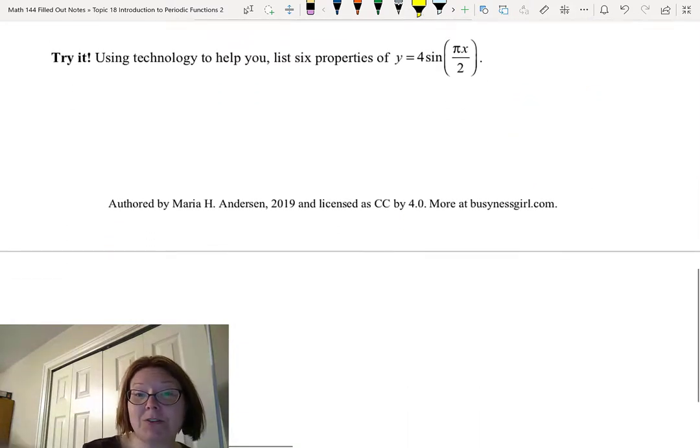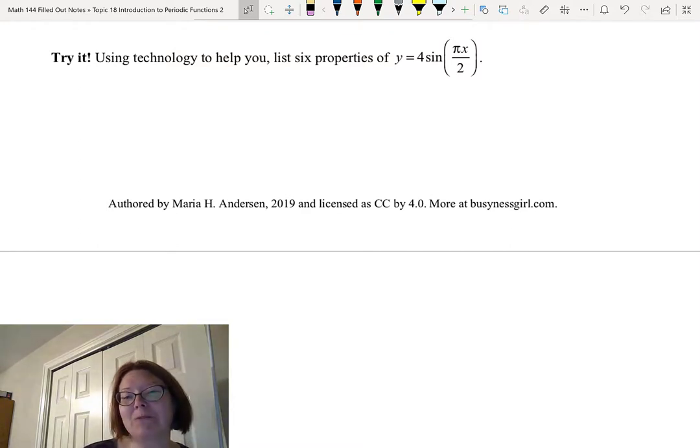Now I have one for you to try. I'd like you to use technology to help you and list six properties of y equals 4 sine left paren pi x over 2 right paren. So the pi x over 2 is all inside the sine function. Pause the video and give it a try.